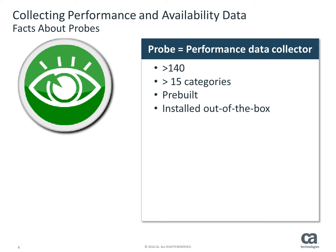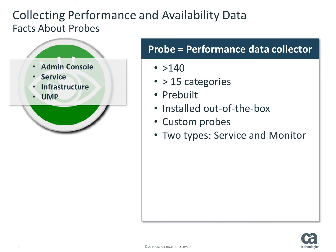These probes cover about 80% of most needs. Custom probes can also be created to monitor and manage specific performance issues not addressed by the out-of-the-box probes. Probes are used to collect performance and availability data about the infrastructure underlying the services and applications running within the infrastructure, as well as about the UIM environment itself. The probes used for reporting the UIM environment are in the categories of admin console, service, infrastructure, and UMP.